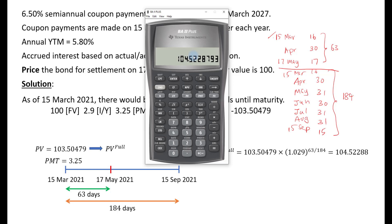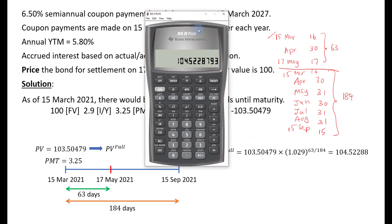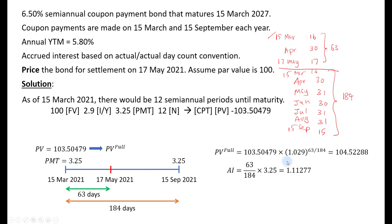To find the flat price or clean price, we calculate the accrued interest: (63 / 184) × 3.25 = 1.11277. Subtracting this from the full price gives us the flat price.